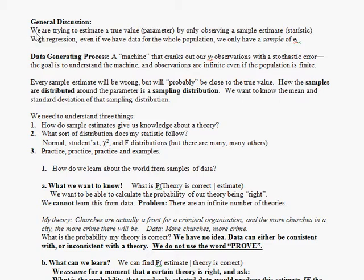What we're trying to do is estimate a true value, a parameter, a population mean, a population proportion, or a population variance, something like that, and we have to guess at the value of the parameter by only observing a sample estimate, which we call a sample statistic. With a regression, I want to point this out, even if we have data for the whole population, we do not get the true slope.